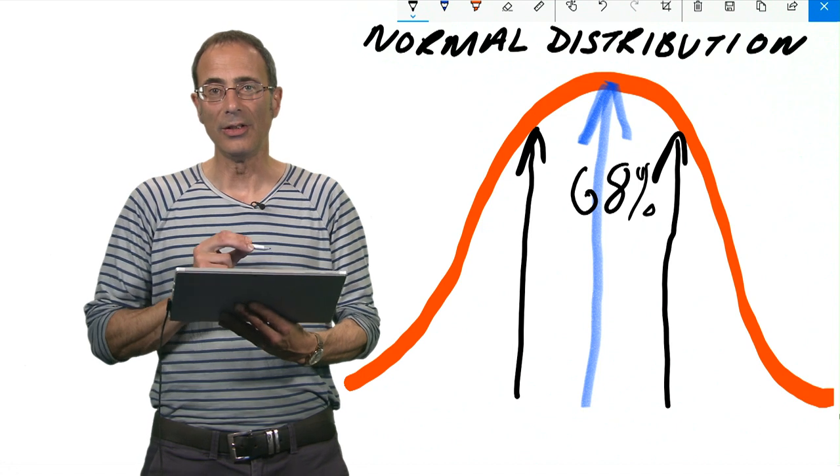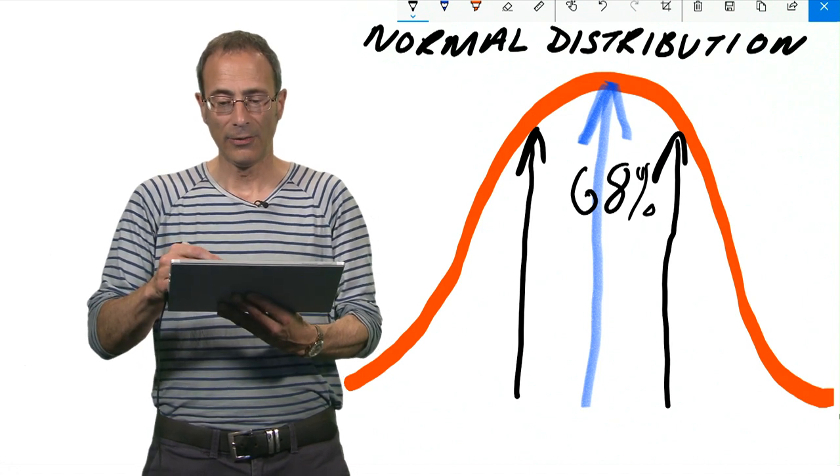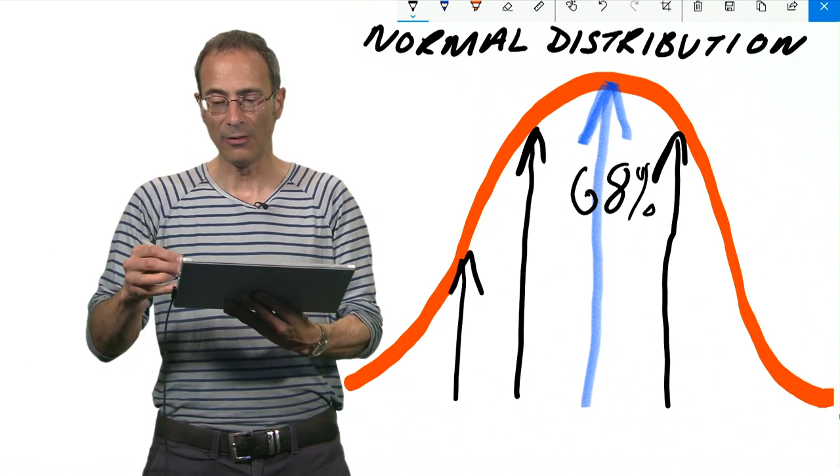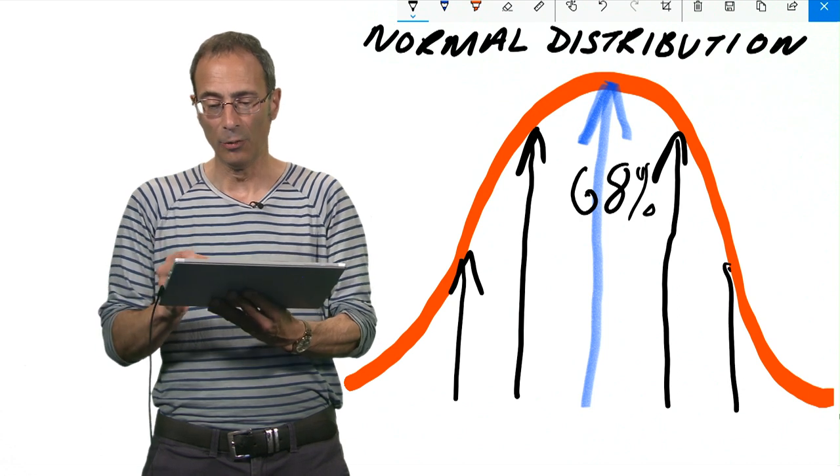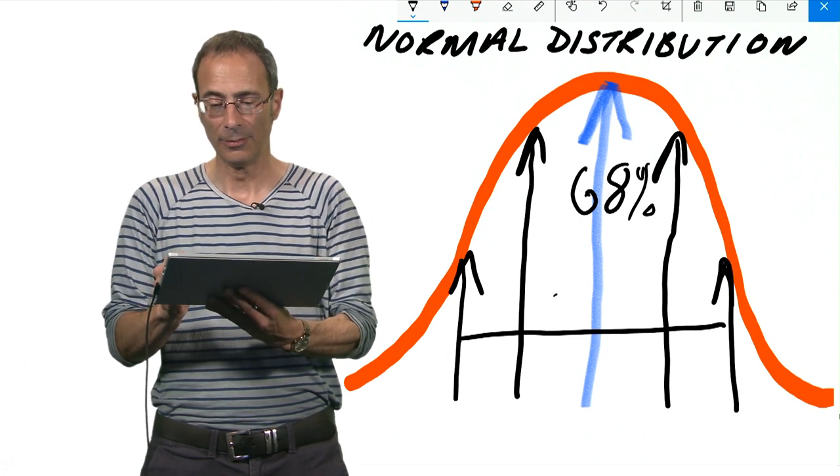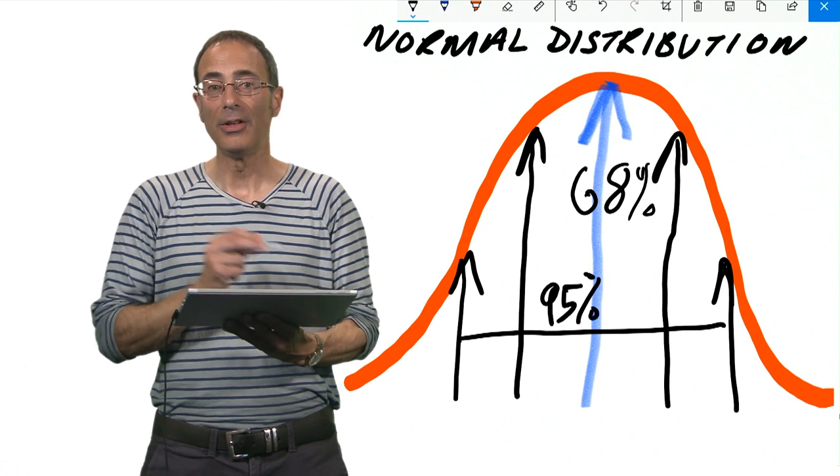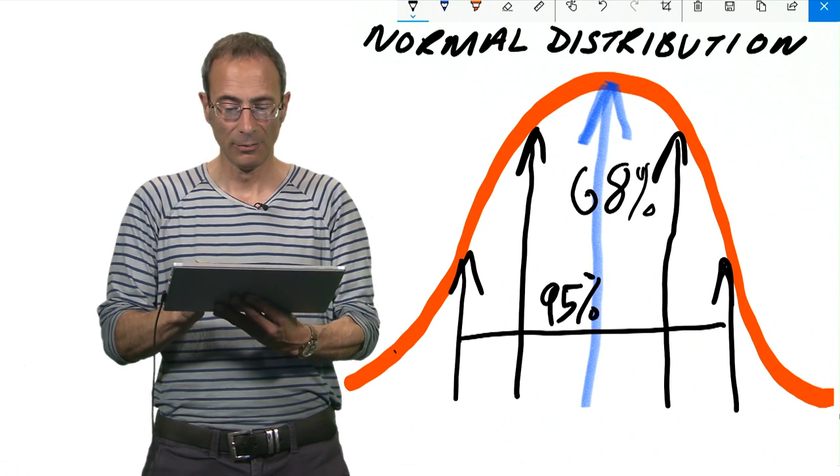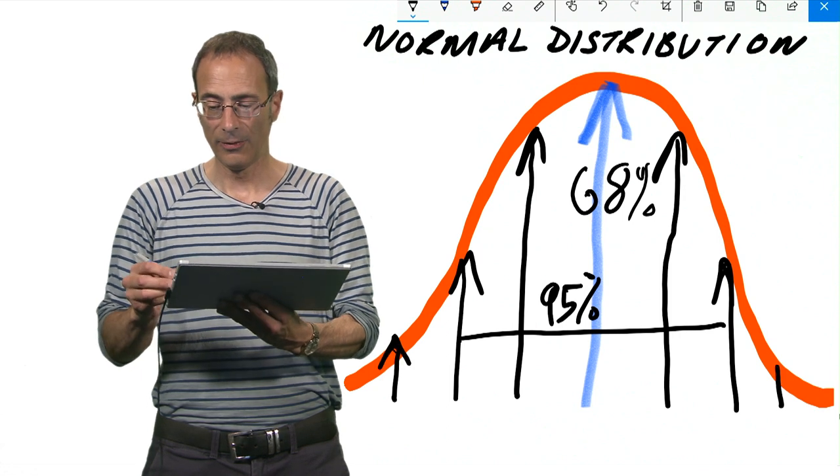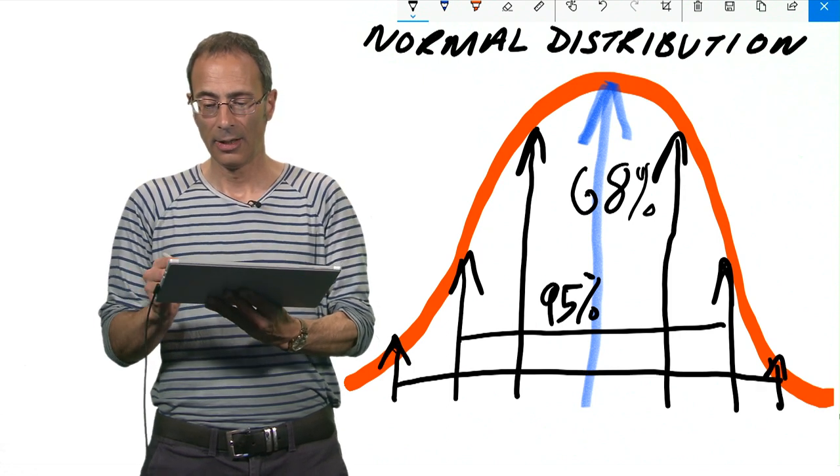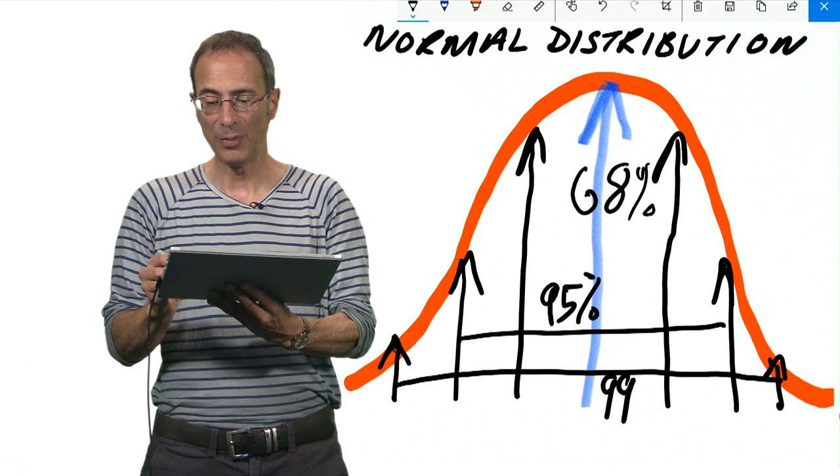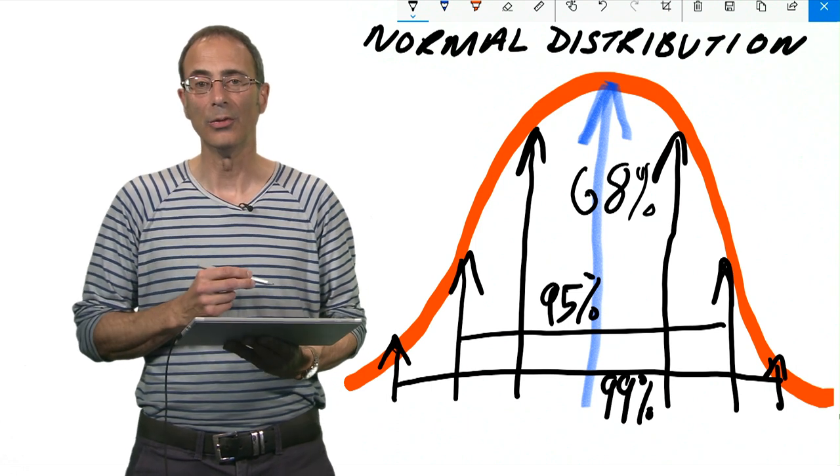Within two standard deviations you'll find 95% of all possible scores, and within three standard deviations you'll find just about 99% of your scores.